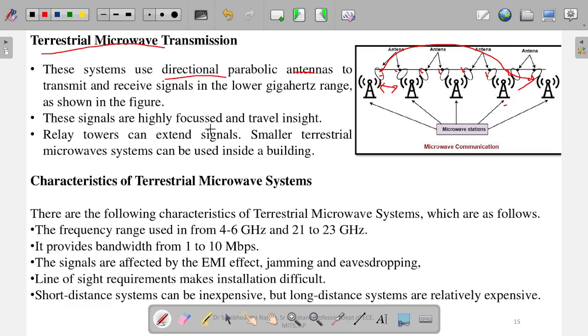These signals are highly focused and travel inside. If there is a parabolic antenna like this, whatever signals come here, all the signals will get focused to this antenna. It increases the efficiency of the antenna in this way. The best example is your DSTV antenna, which is nothing but a parabolic antenna.